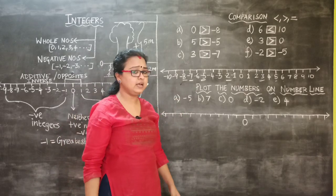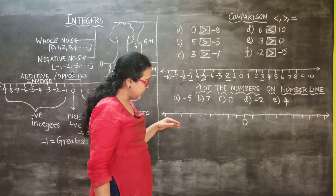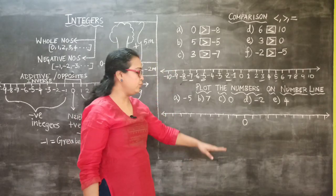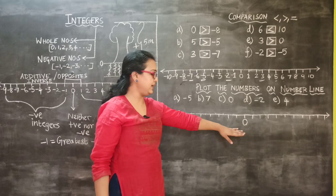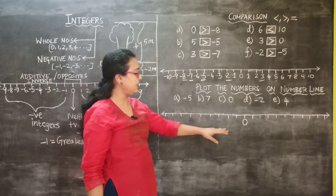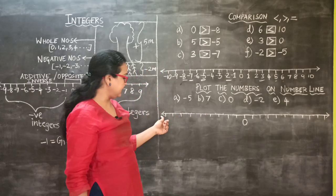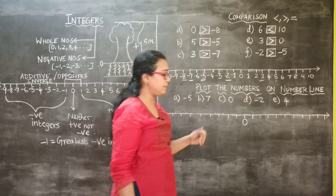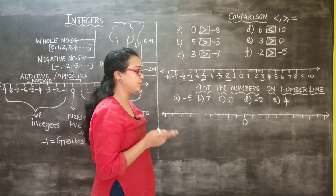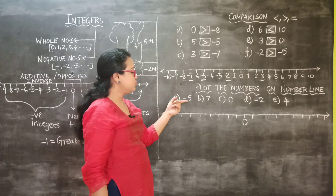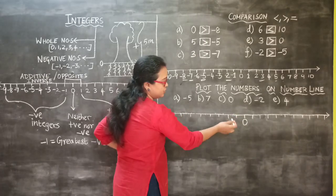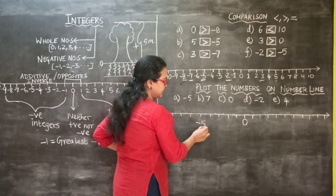Now let's see how to plot numbers on a number line. Draw a line, divide it into equal parts, and place 0 at the center. Add arrow marks on both sides because the numbers are endless — towards the left for negative integers and towards the right for positive integers. For minus 5, count 5 steps to the left from 0: 1, 2, 3, 4, 5 — minus 5 is here.